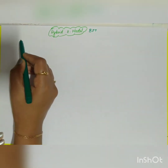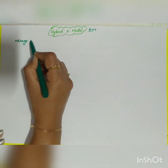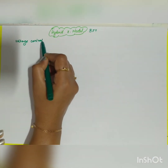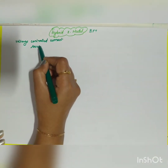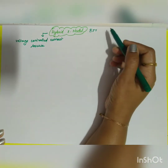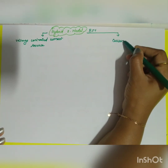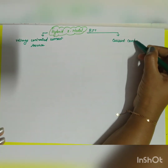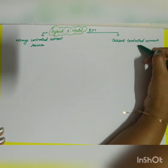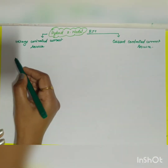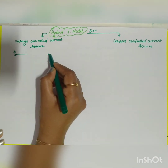The first configuration is the voltage controlled current source. The second configuration is the current controlled current source. In both cases, the input is your base and the output is your collector.